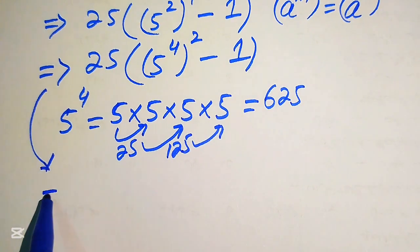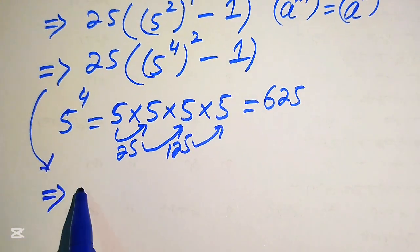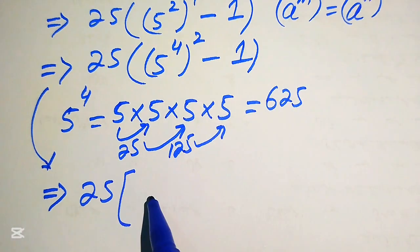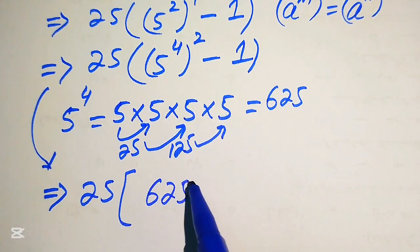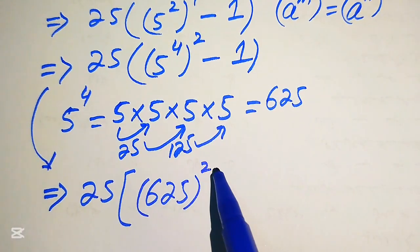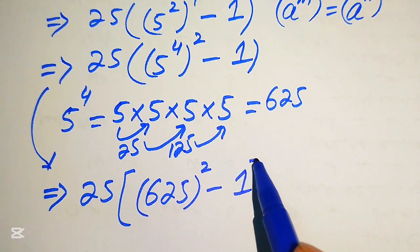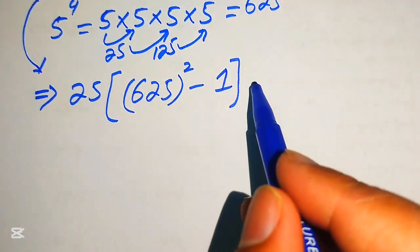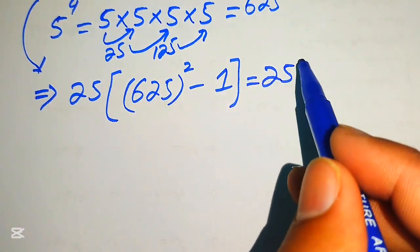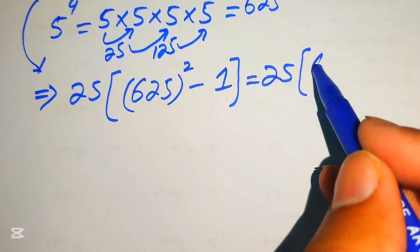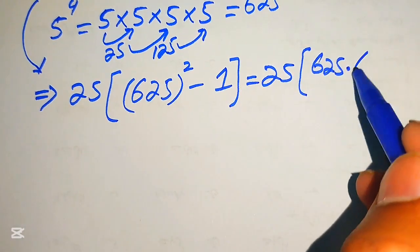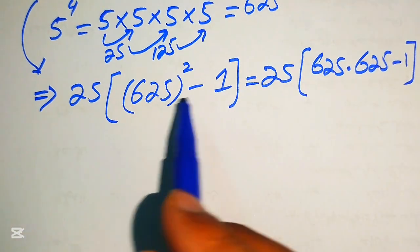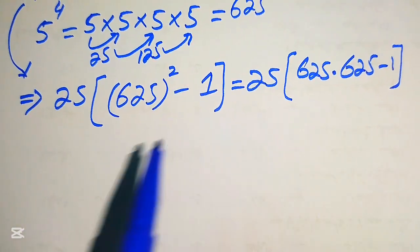So our expression is written as 25 times 625 squared minus 1. In the next step, we expand 625 squared and write it as 625 multiplied by 625, minus 1.